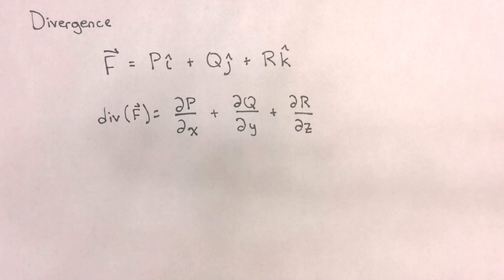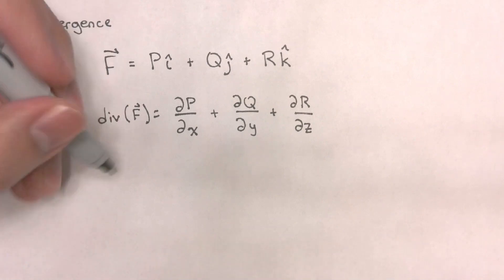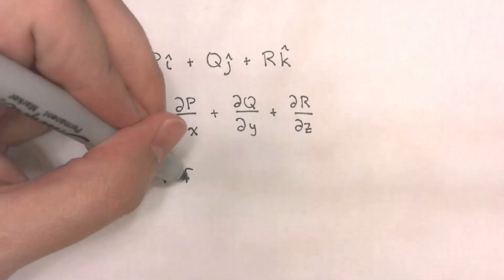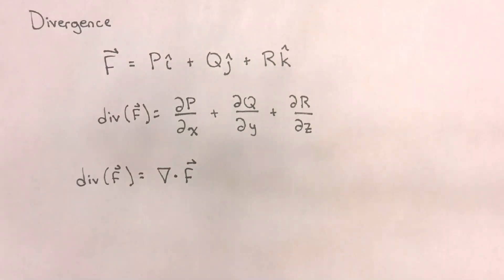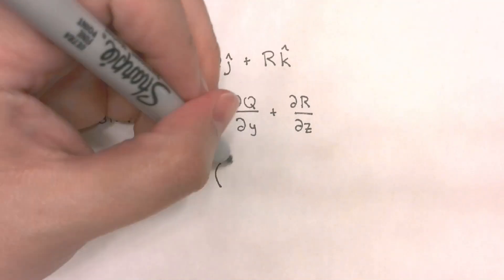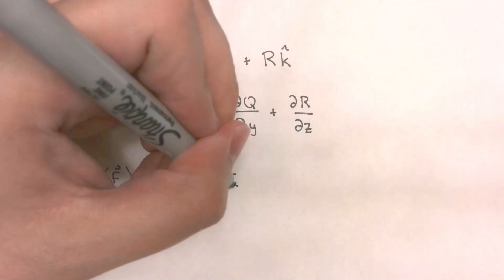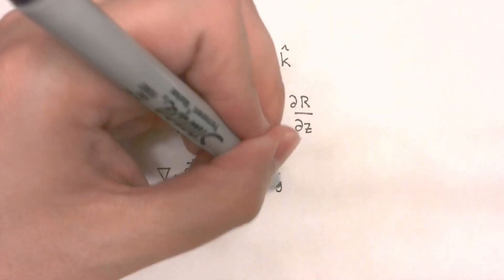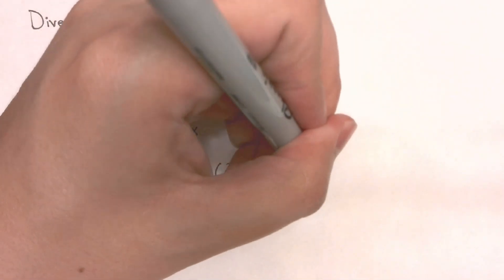Now we've seen this combination before using the del operator. In terms of the del operator, the divergence of vector f can be expressed as del dot f because we are taking and applying the del operator partial with respect to x i, partial with respect to y j, and partial with respect to z k.